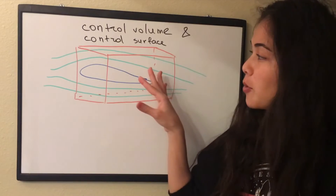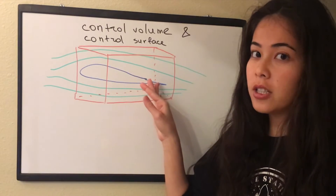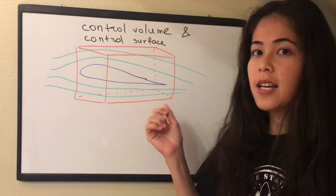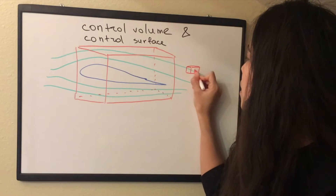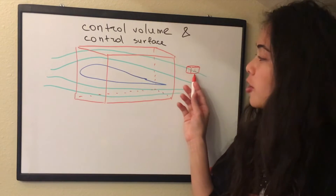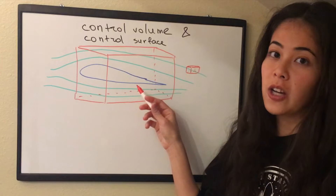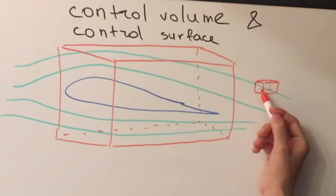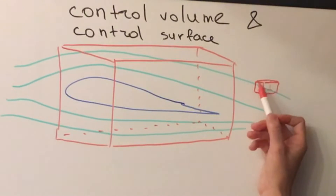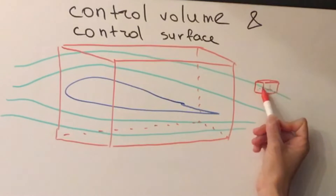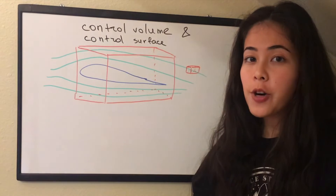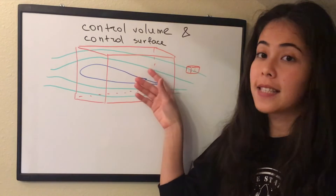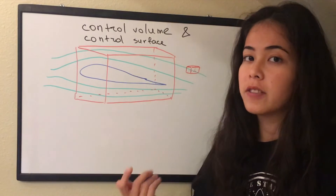For example, here we put a control volume around the whole airfoil, but also we can put it in some other area just in the airflow. Obviously, this control volume is smaller than the one around the airfoil, but this control volume will analyze the properties of air passing through here. So it's just one stream of air, so to say. The concept of a control volume lets you focus on the air inside the control volume and solve the problem.